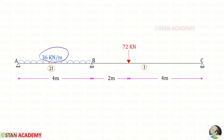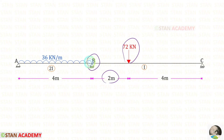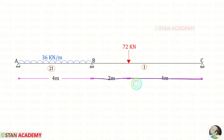The UDL acts for the whole span. In span BC there is a concentrated load of 72 kN, acting at a distance of 2 meters from support B. Span AB is 4 meters long and its moment of inertia is 2i. Span BC is 6 meters long and its moment of inertia is i.